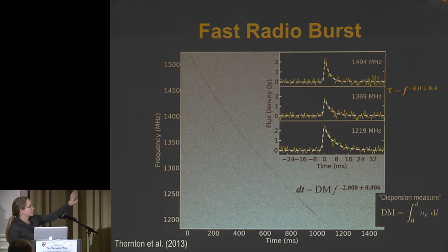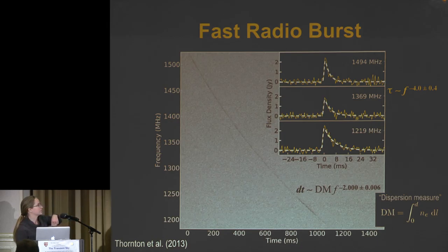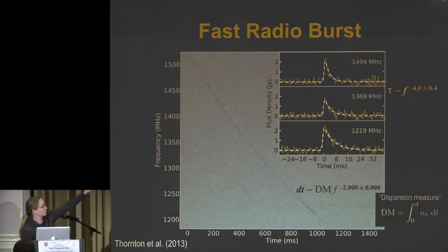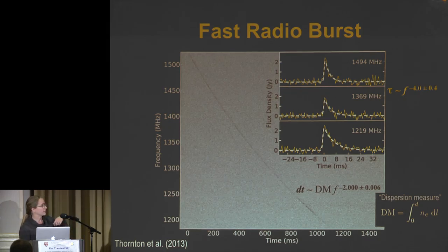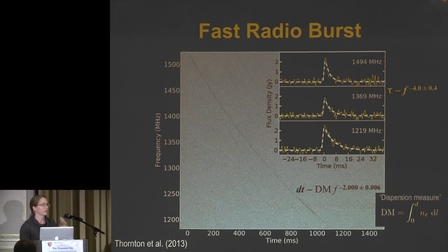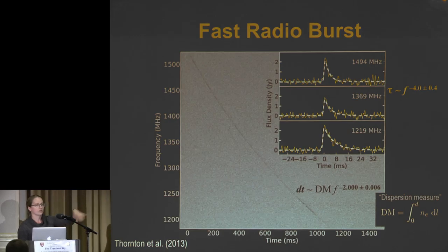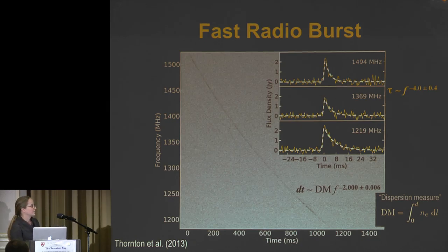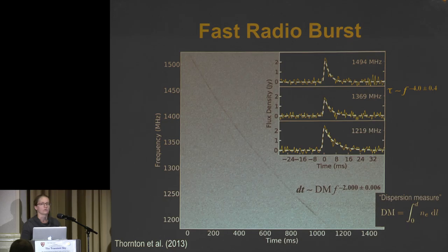Here is a fast radio burst — a bright detection with a signal-to-noise of about 50. I'm showing a spectrogram: frequency-dependent arrival time. The pulse is swept in frequency, following fairly precisely a frequency-to-the-minus-two delay. This is quantified by the dispersion measure, which you get by integrating along the line of sight out to the distance of the burst. Using the dispersion measure, you can measure either the electron density along the line of sight or the distance to the burst.